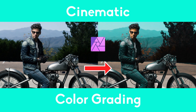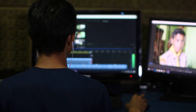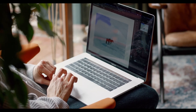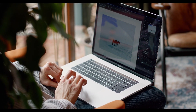Welcome to the Creative Huxley. In this tutorial we'll learn how to do cinematic color grading in Affinity Photo. Color grading is essentially the process that you use to enhance a photo. It's usually associated with video editing, but color grading takes place in photography too.